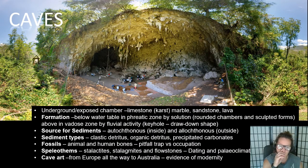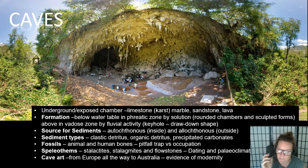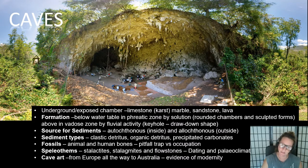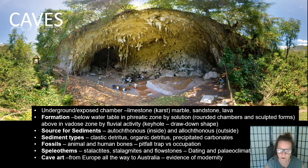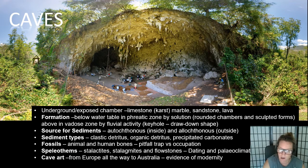Caves are underground or exposed chambers, usually found in limestone areas, which we call karst. But you can also find marble caves - marble is metamorphosed limestone - and sandstone caves, which are more like rock shelters. You can also get lava tubes, which we also call caves. But we're going to be looking at the limestone version.